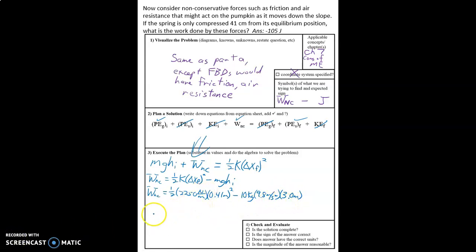We plug those numbers into our calculator, and you should definitely do this yourself to make sure you can get the right answer. And I got negative 104.8875 which I'm just going to round to negative 105 joules.